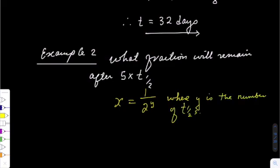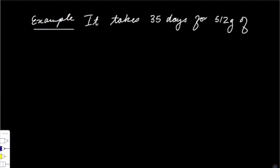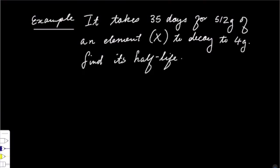It takes 35 days for 512 grams of an element x to decay to 4 grams. Let's find its half-life. Half-life is ln 2 over k,